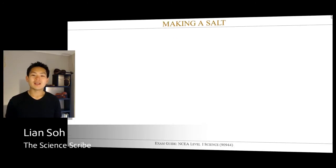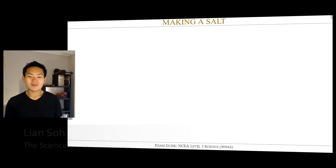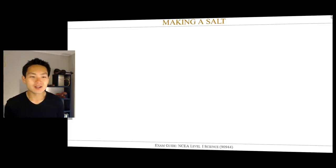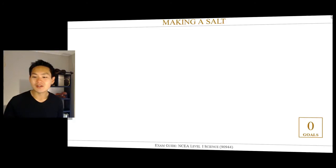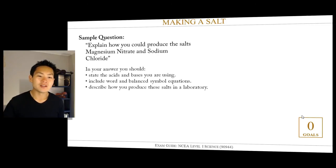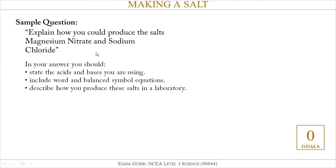In this video we're going to be looking at how to make a salt. This video is made for NCEA Level 1 students who are sitting the external exam describing aspects of acids and bases. During this video you'll notice that in the bottom right hand corner there will be a set number of goals that will be updated as we attempt to answer this particular sample question. The question is to explain how you could produce a salt — magnesium nitrate and sodium chloride.